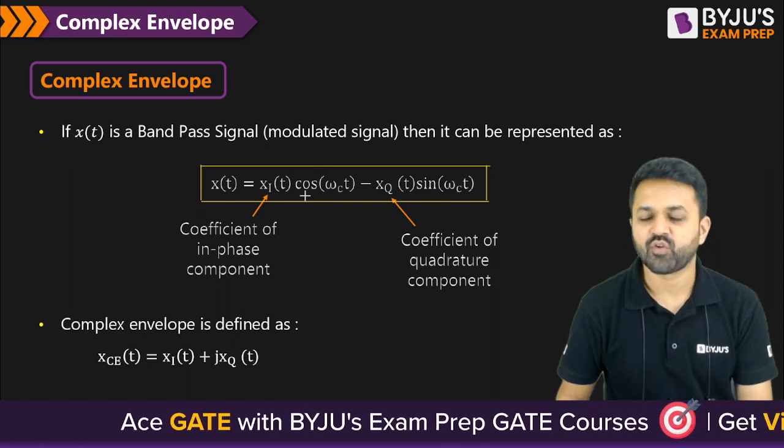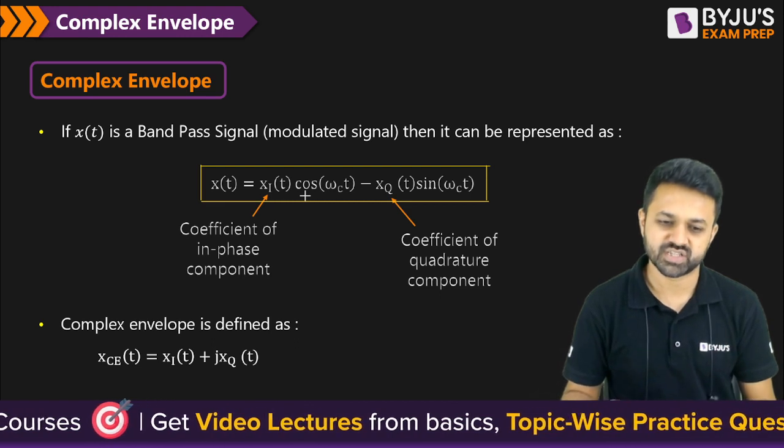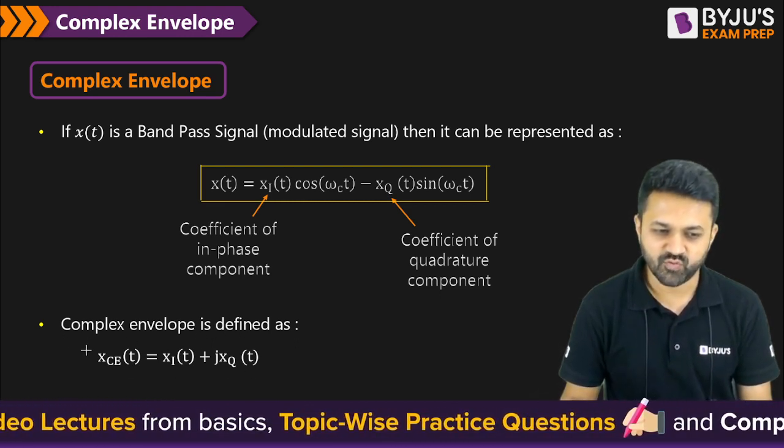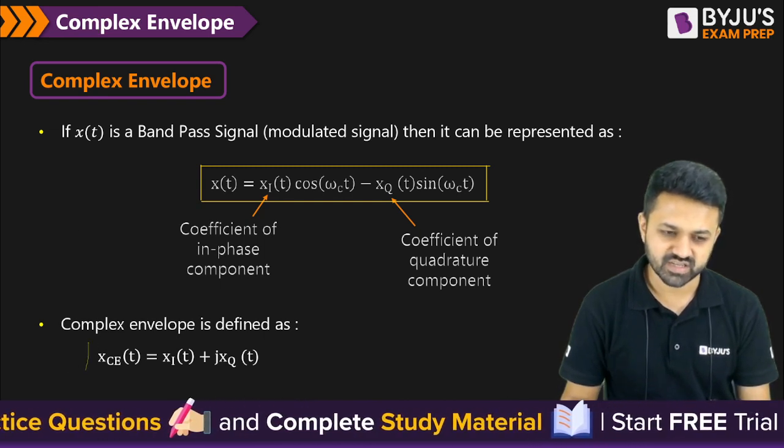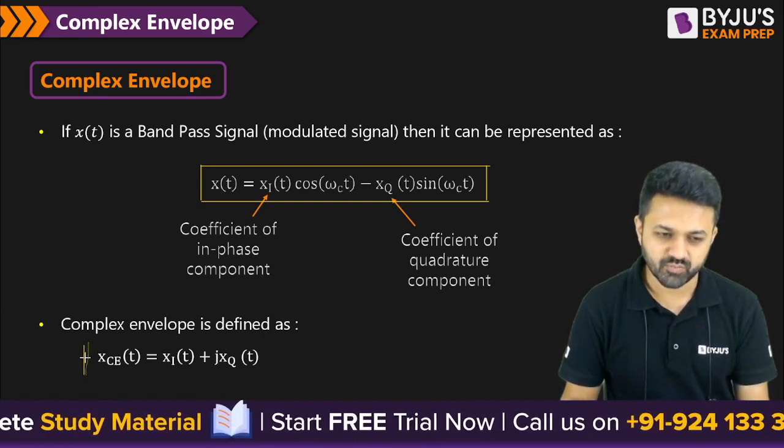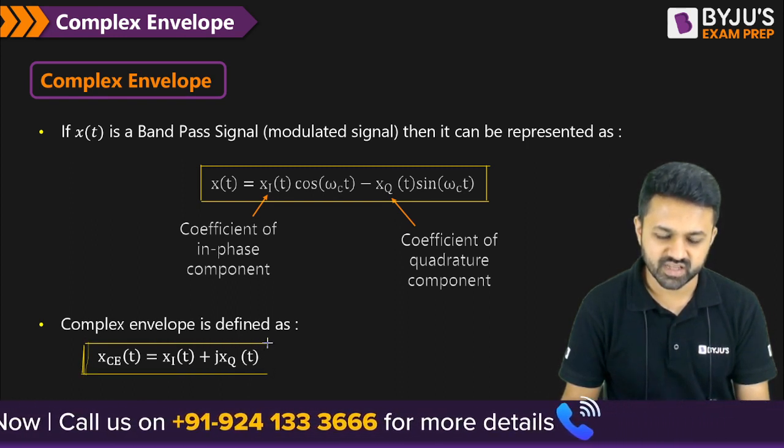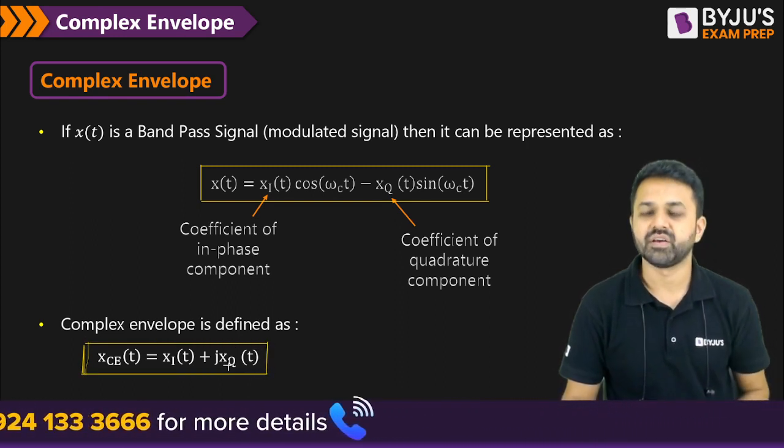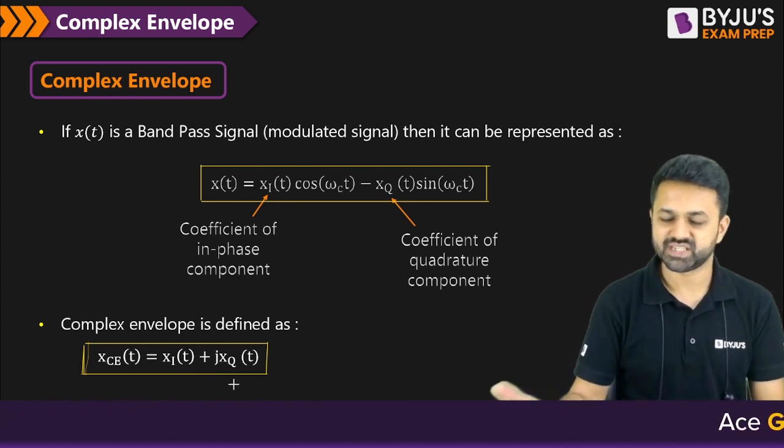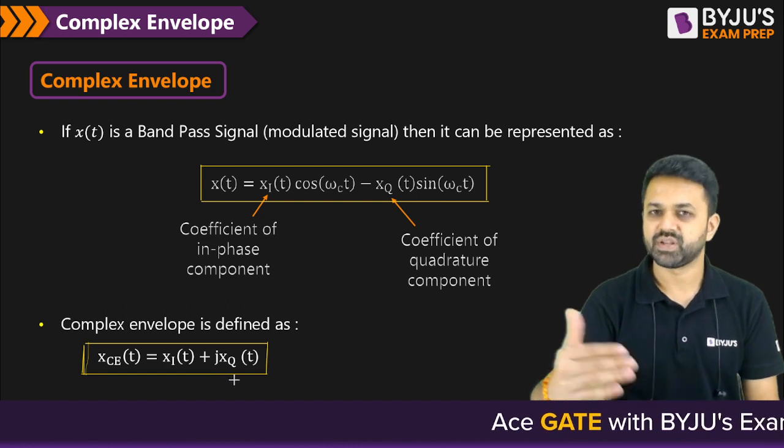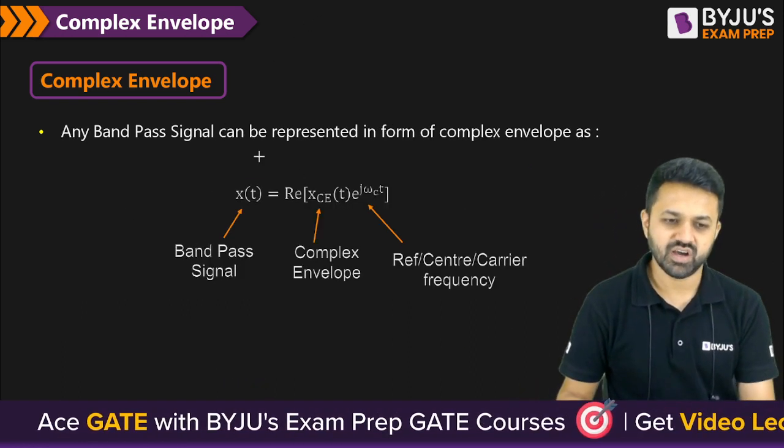So the coefficient of cos is called the in-phase component. And the coefficient of sin is called the quadrature component. And if you want to write the complex envelope directly, you can write by using this relation. So once you find the in-phase component and the quadrature component, just you have to write in the form of a complex number. So coefficients are there. You have to write in the form of a complex number, a plus jb. In-phase component plus j into quadrature component coefficient.